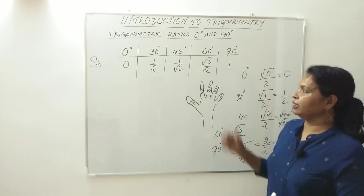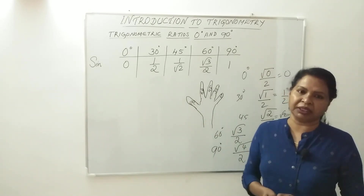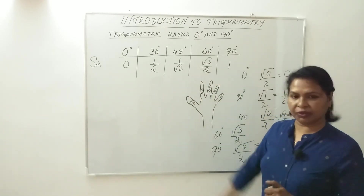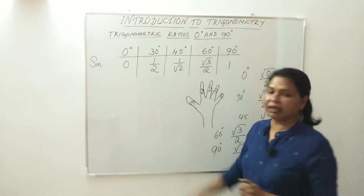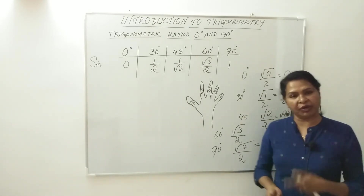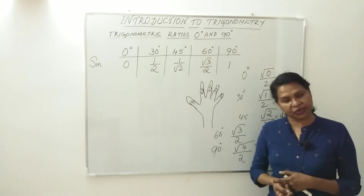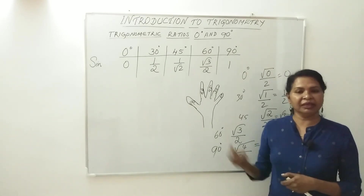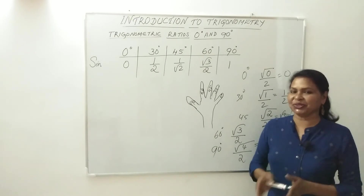So if you get sine values and then reverse the order you get cosine values, and sin by cos is tan, 1 by sin is cosec, 1 by cos is sec, and 1 by tan is cot.